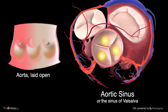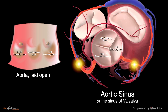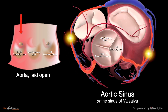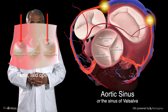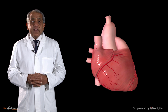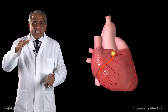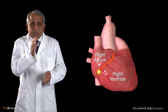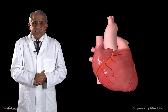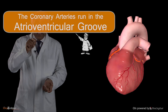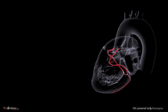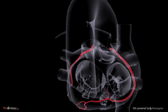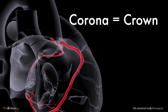There are three sinuses, two of which give rise to the coronary arteries — one to the right coronary artery and the other to the left coronary artery. The two coronary arteries run in the sulcus or groove between the atria on one side and the ventricles on the other; in other words they run in the atrioventricular groove. Together they form a sort of crown around the heart, and that's why they are called the coronary arteries — corona being a word for crown.